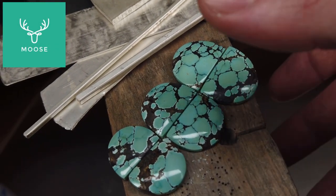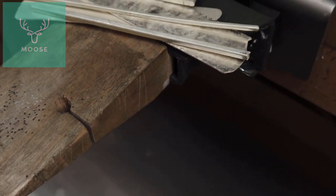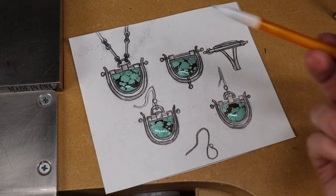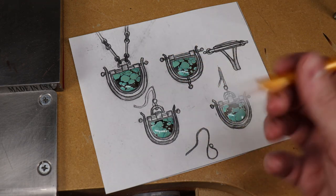I was sent this turquoise from Turquoise Moose, and I'm going to be using them to make this matching set of jewelry. So a necklace, ring, and matching earrings. So let's get started.